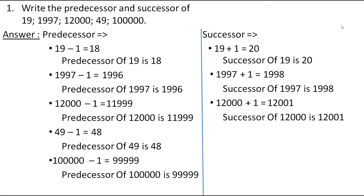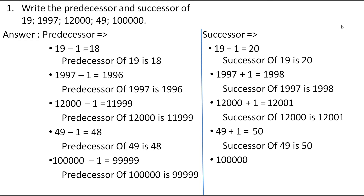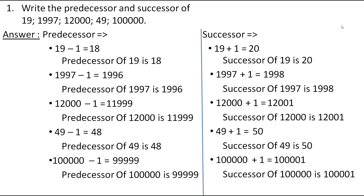The next number is 1,000. Adding 1, we get 1,001. Therefore, the successor of 1,000 is 1,001.